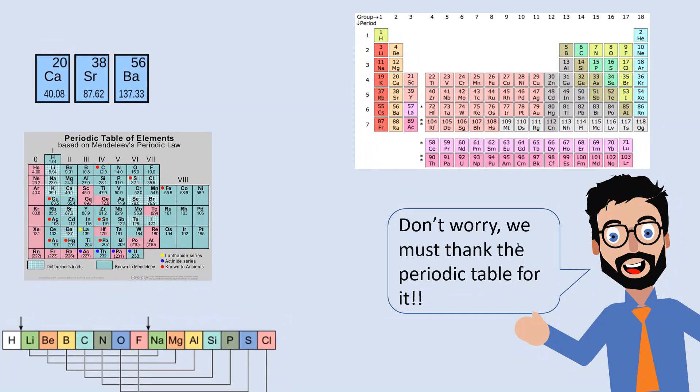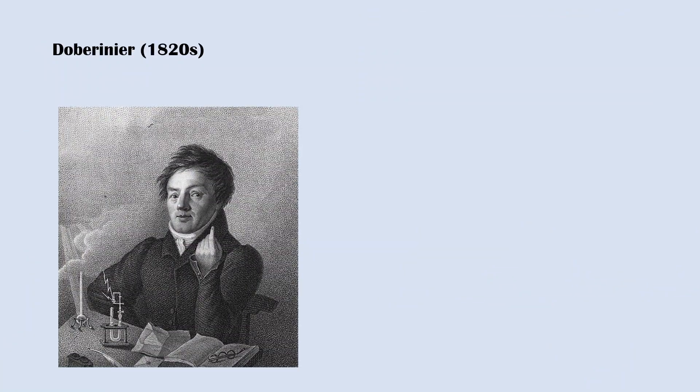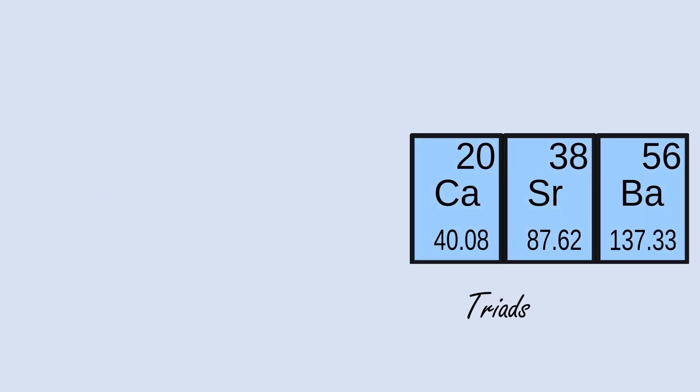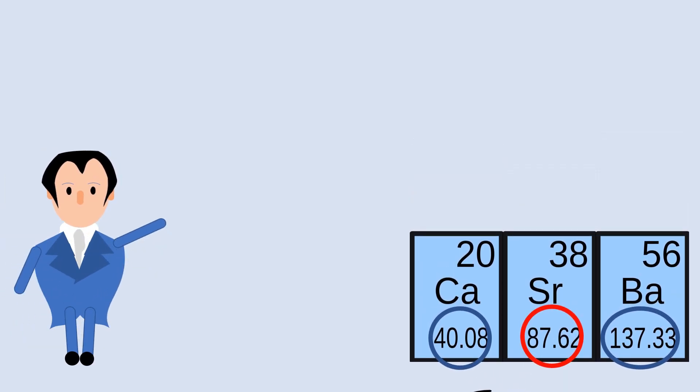Dobereiner in 1820, what he did is divide the elements into groups of three and the groups are called Triads. He arranged them in such a way that the atomic weight of the element in the middle was the arithmetic mean of the other two. Let us understand this with the help of an example.